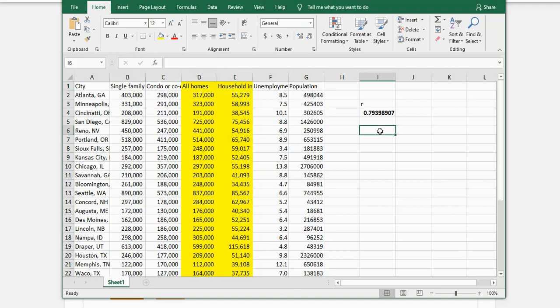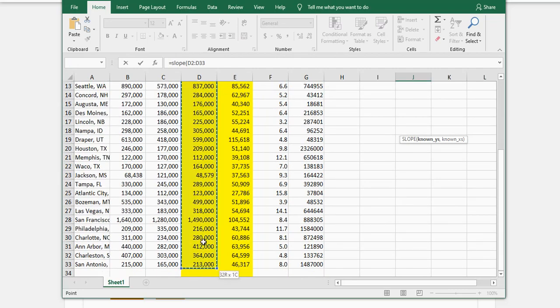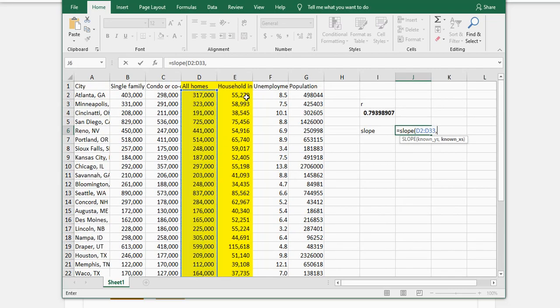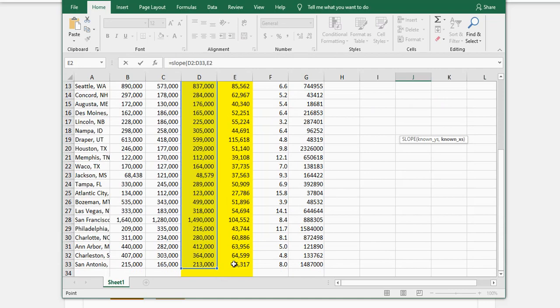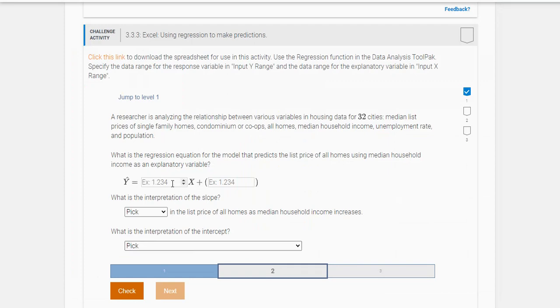So we need the slope of the regression equation. That's equal to SLOPE. You're going to use your known y's, so we want the price of all homes, comma, and then our known x's. So then we want the household income. Close the parentheses, and you should get this. This is our slope, 11.637, when I round it to three decimal places.